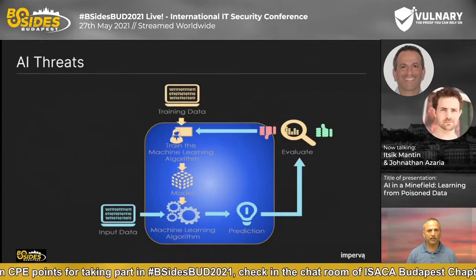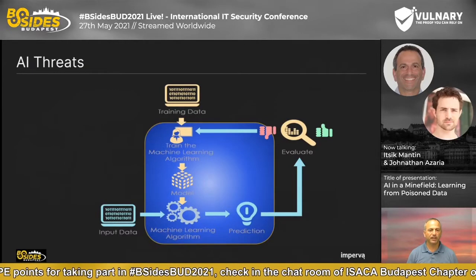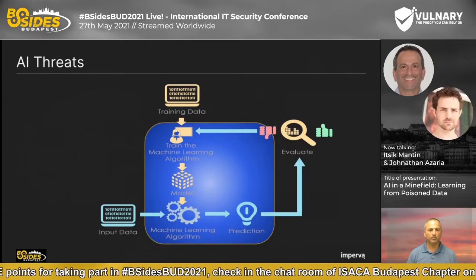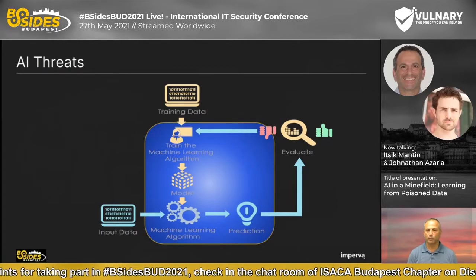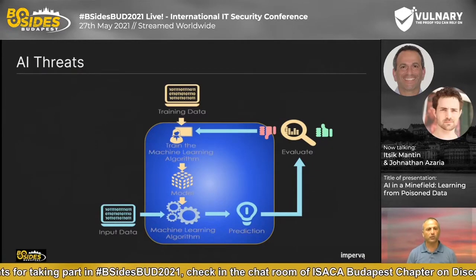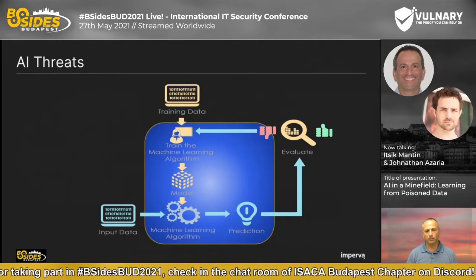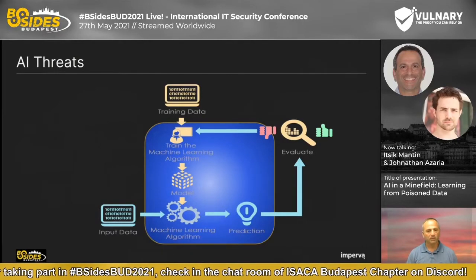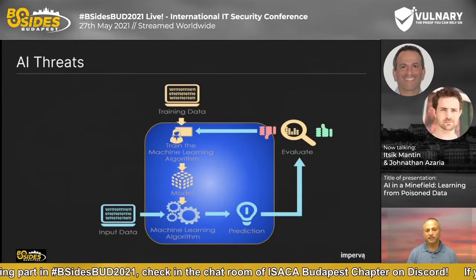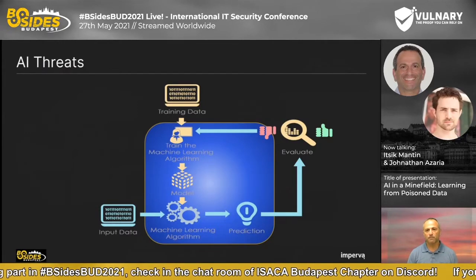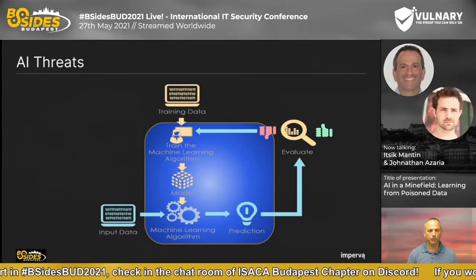This is a typical machine learning system. In the training phase, training data is fed into an algorithm that builds a model — this can be a classification model, regression model, trees, forest, neural network, or whatever. In the inference phase, input data is fed to the model and the model makes decisions: class A, class B, dog, cat, et cetera. In some cases, the outcome of the model is evaluated in order to continue improving the model.